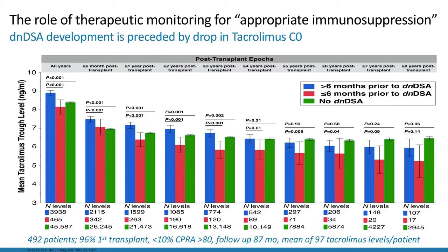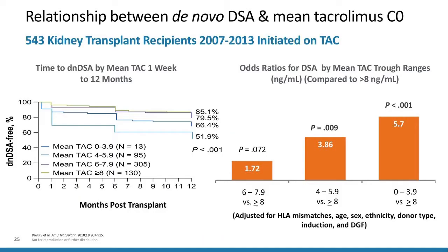This is all fairly retrospective. A single-center study of 543 transplant recipients from 2007 to 2013 on tacrolimus-based therapies looked at appropriate tacrolimus trough exposure range over time in the first year and its association with DSA. The percentages of patients that were de novo DSA-free based upon mean tacrolimus trough levels showed a graded difference. Odds ratios for DSA adjusted for HLA mismatches, age, sex, ethnicity, donor type, induction therapy, and DGF showed that any mean trough level less than 8 was associated with increased odds for de novo DSA formation — highest in those minimally exposed to tacrolimus at 0 to 3.9, with an odds ratio of 5.7.